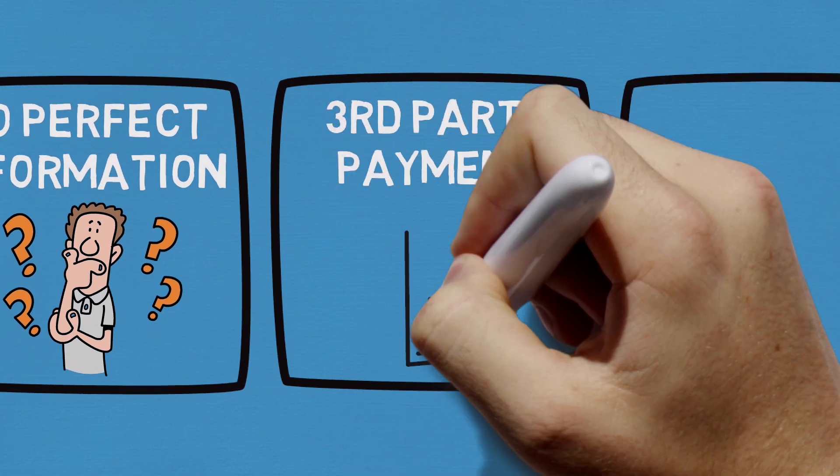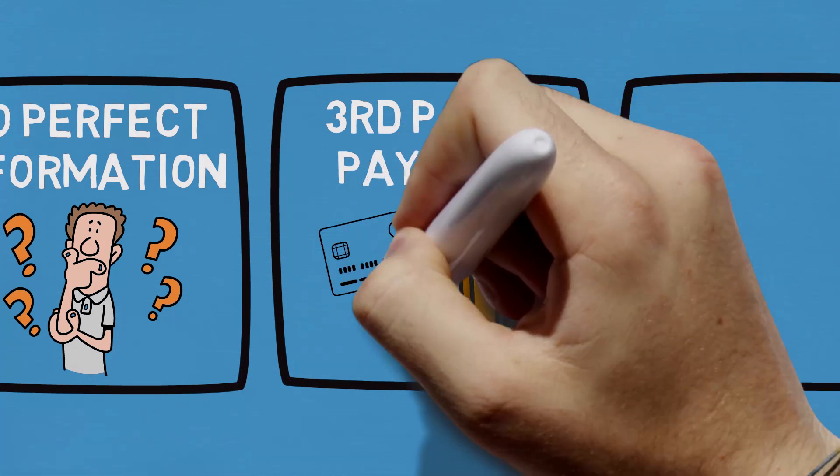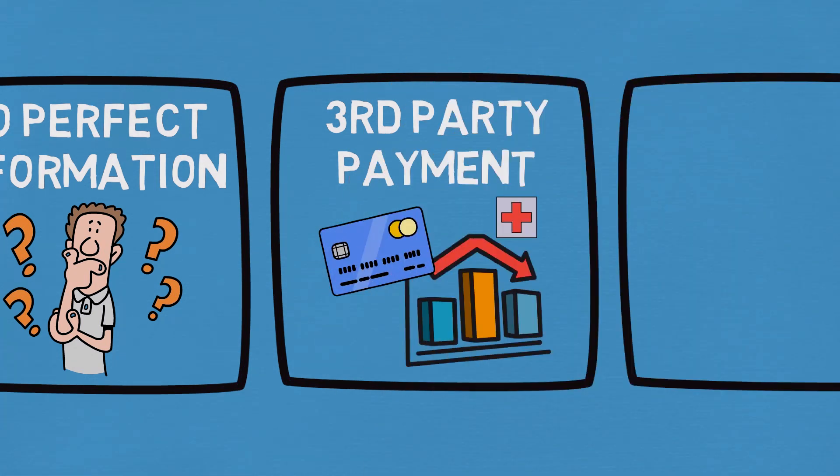Then we have the problem of third-party payment. Because health insurance companies foot the bill for healthcare, neither the supplier nor the consumer is primarily concerned with how much healthcare is being consumed or at what cost. Both healthcare providers and patients are incentivized to want more healthcare to be provided, whether it's needed or not. Insurance companies try to realign these incentives, but empirical data shows this never really works well — it adds substantially to administrative costs, increases frustration, and leads to both providers and consumers trying to game the system.